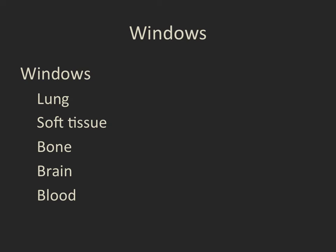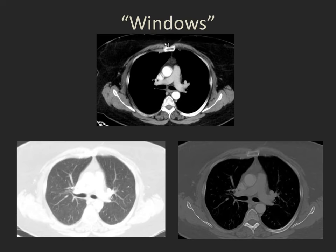Windows do not require reprocessing of the primary data, but instead are different ways of displaying the information that is on the image. Each of these different windows aims to maximize the display of one particular set of soft tissues, but at the cost of not seeing the others. For example, here we are looking at soft tissues of the mediastinum, but we cannot see the lung. We can see the lung on the lung window, but we can't see the mediastinum.